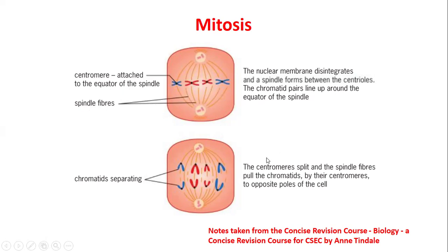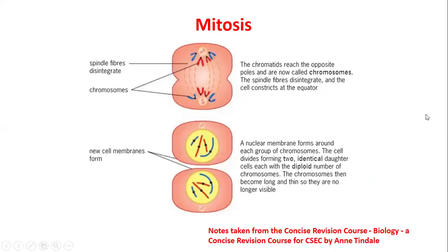The next event is that the centromere splits and the spindle fiber pulls the chromatids apart — pulling them by the centromere to the opposite poles of the cell. We can see where the chromatids are separating. Then the chromatids reach the opposite pole and are now called chromosomes again, and the spindle fiber begins to disintegrate.